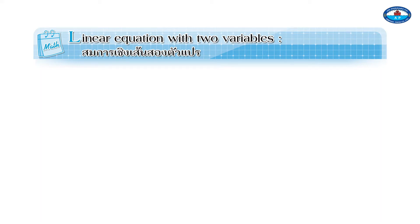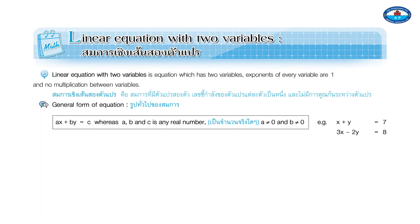A Linear Equation with Two Variables is an equation which has two variables. The exponents of every variable are one, and there is no multiplication between variables.